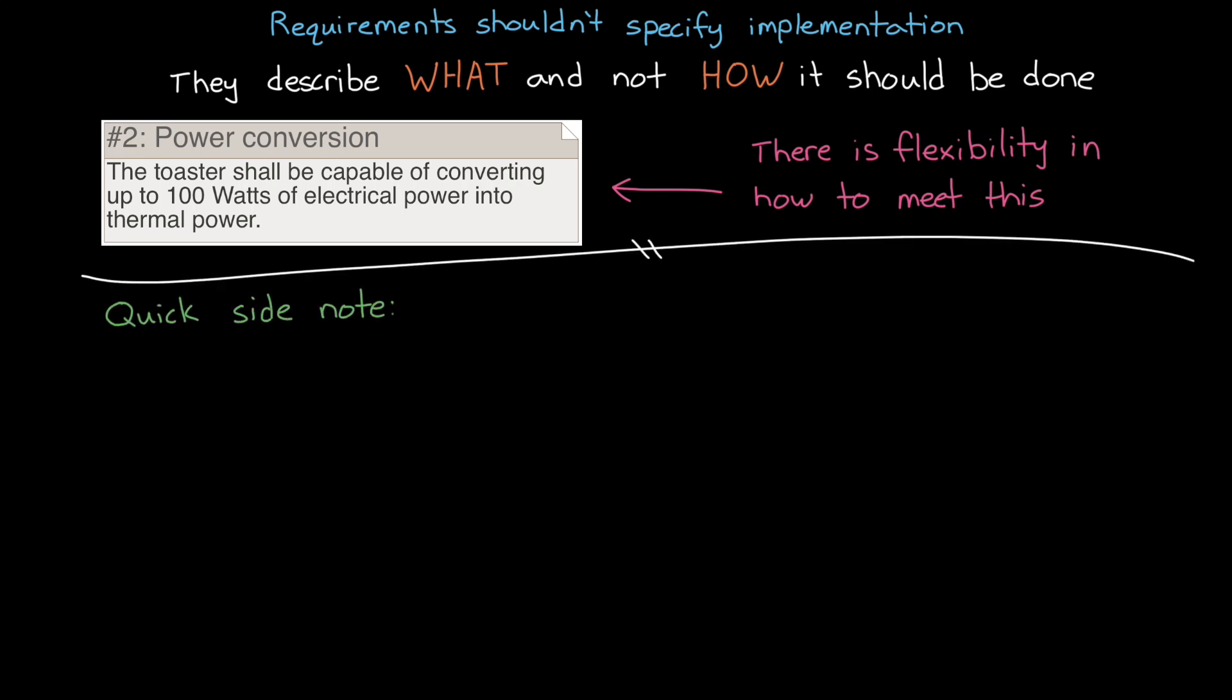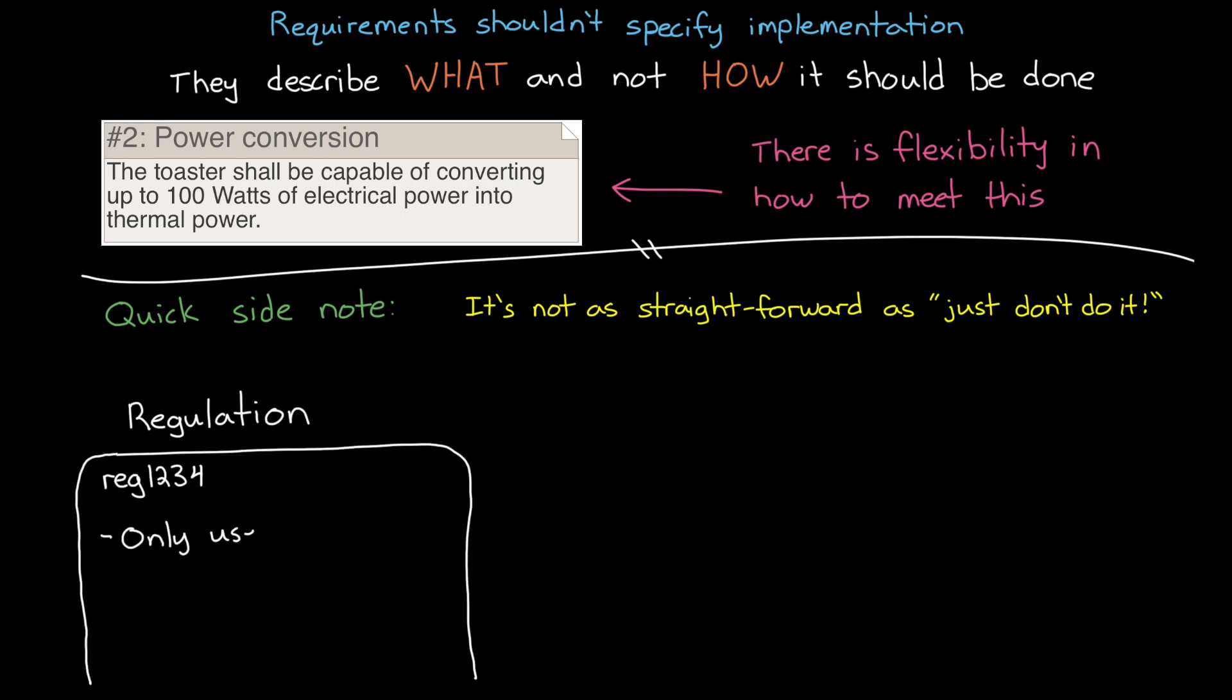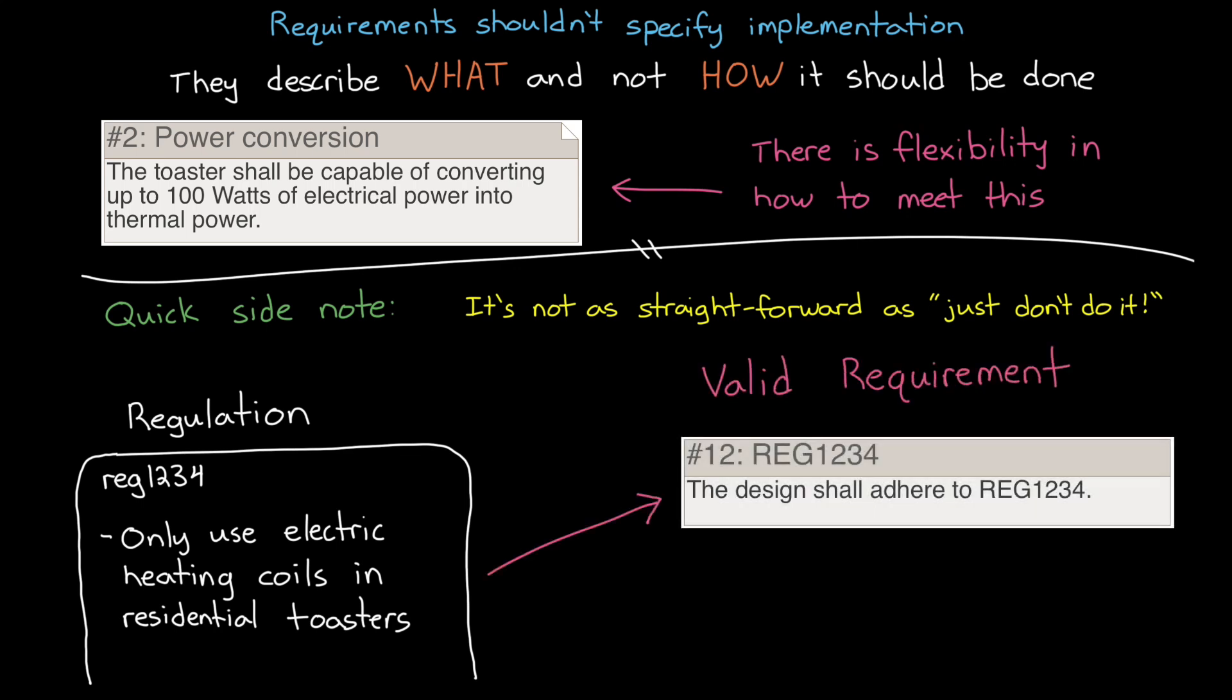Now as a quick side note, there is a bit of a gray area in terms of specifying implementation with a requirement. It's not as straightforward as just saying, don't do it. If a particular implementation is required and you don't want flexibility in the design, then it can be specified as a requirement. For example, there might be some government regulation that says that you can only use electric heating coils in a residential toaster. In which case, you would write this as a requirement. But in general, we try to stay away from forcing a particular implementation through requirements and just focus on defining the characteristics and features of the design.